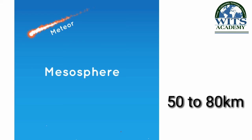Mesosphere — mesosphere ko hum middle atmosphere bhi kehte hain. Yeh zameen se 50 kilometer se lekar 80 kilometer ki bulandi tak paai jaati hai. Aur yahi layer shooting stars yaani meteors ka markaz banti hai. Khala yaani space se aane wale meteor jab zameen ki taraf badhte hain to isi layer mein resistance aur digar awamil ki waja se jal kar shooting stars ki shakal ikhtiyar kar lete hain — aur hume aasman par aag ke shole numa shakal mein dikhate hain, jise hum aam alfaaz mein toota hua tara bhi kehte hain.